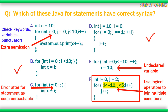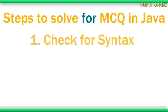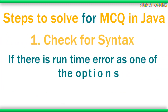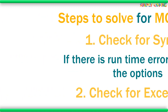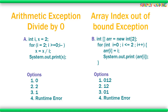Now other than syntax, you might have some cases where the option is a runtime error or exception. Two most common ones are divide by zero and array index out of bounds exception. In divide-by-zero questions, you will see a division somewhere inside the for loop and some condition of the loop leading to the denominator being zero. Like here, i goes from 2 down to 0 — when i reaches 0, x will be divided by 0, giving a runtime arithmetic exception.